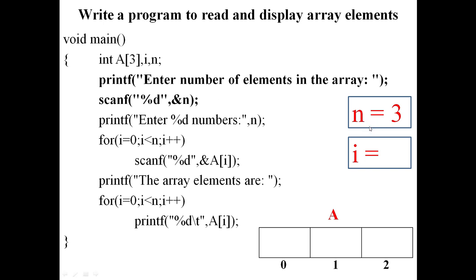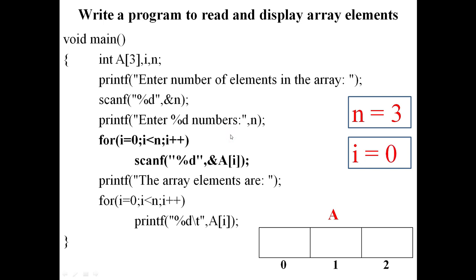Say n equals 3. The elements are read one by one using a for loop: for i = 0, condition i less than n, i++. With i = 0, condition is true, so scanf reads a[0]. Assuming value 10 is entered, 10 is assigned to a[0]. Then i increments to 1. Condition 1 < 3 is true, so scanf reads a[1]. Say it is 20.